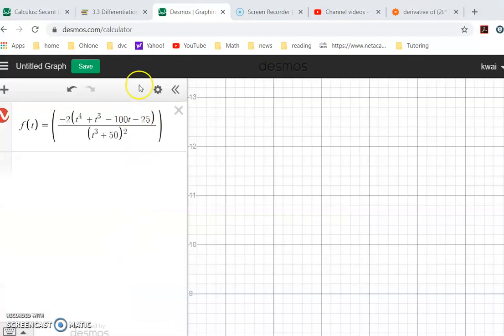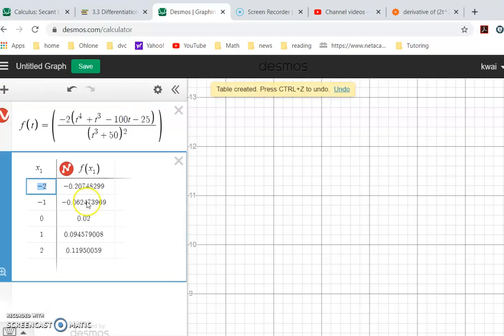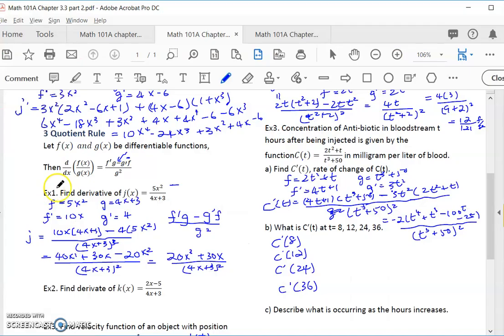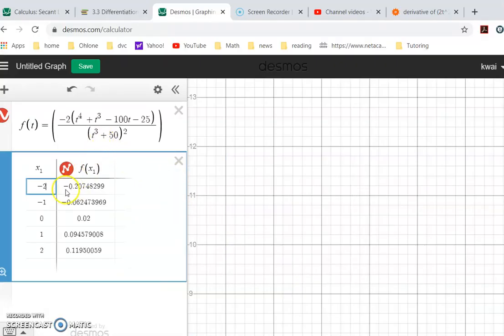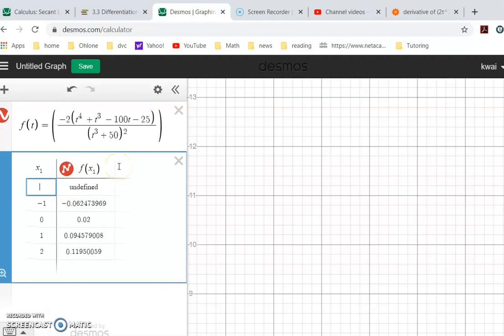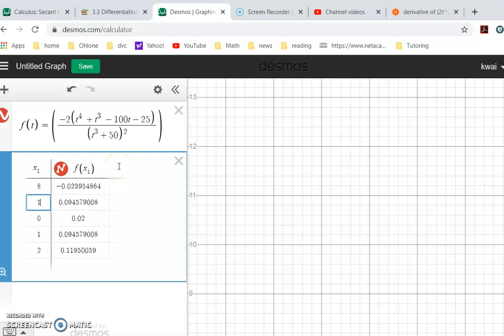The table is this, because I have a typo here, it should be f of t instead of f of x. So once I fix it, then the table comes up, and I just use this to figure out the 8, 12, 24, 36.